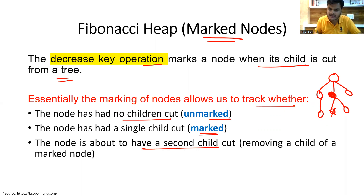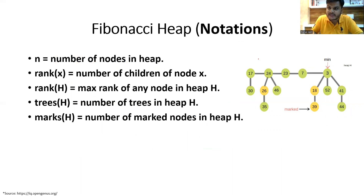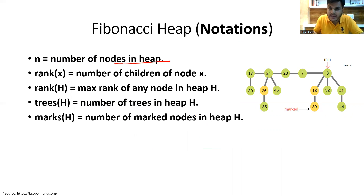If a node has a second child cut — removing a child of a marked node — that node becomes a non-root element. Regarding notations: n is the number of nodes in the heap. If we count the nodes here, we get 14, so n equals 14.